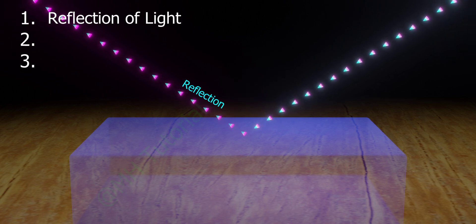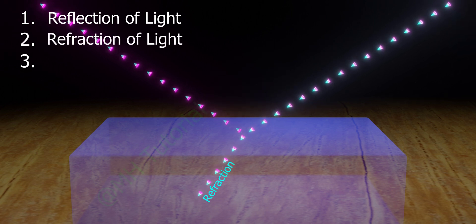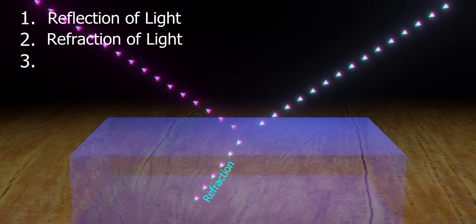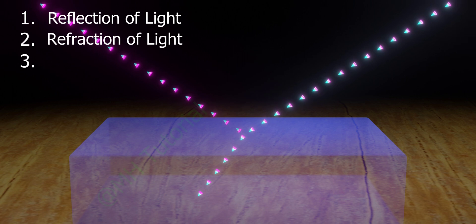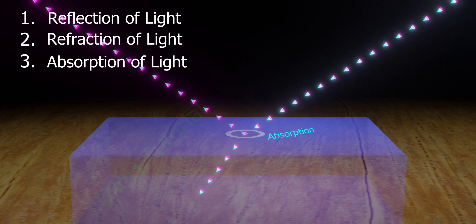A second portion enters the second medium. It is the refraction of light. And a third portion gets absorbed by the interface. This is known as absorption of light.